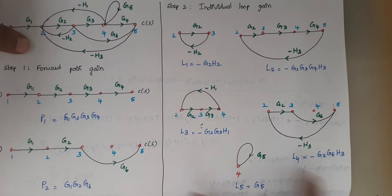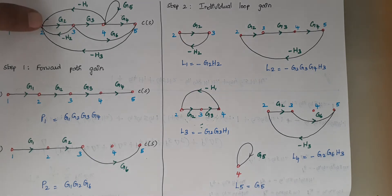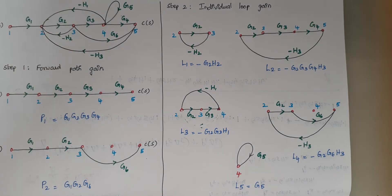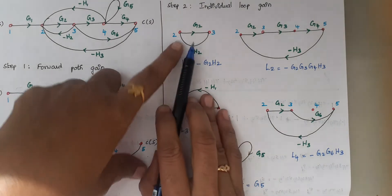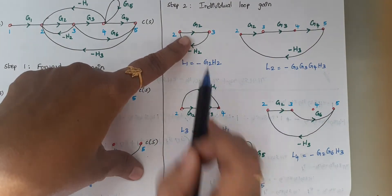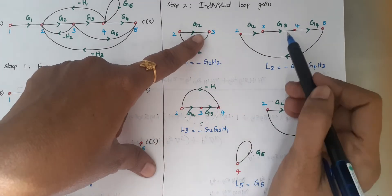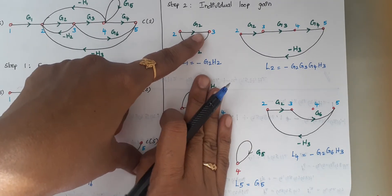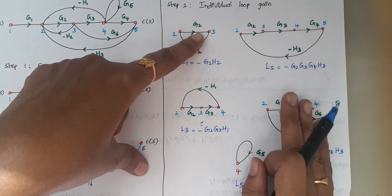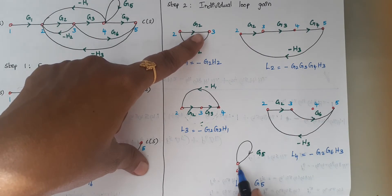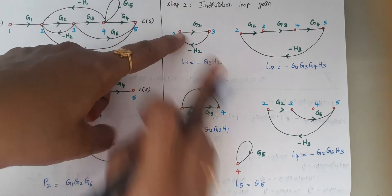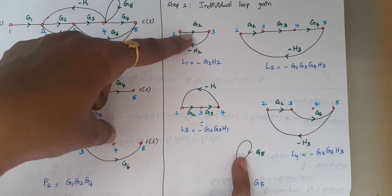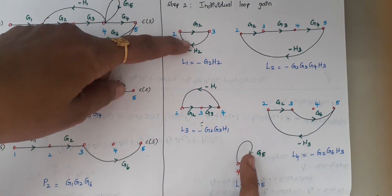Step 3 is finding the gain product of non-touching loop pairs. A non-touching loop pair consists of two loops that share no common node. Taking loop 1 (nodes 2 and 3), we compare it with all other loops. Loops 2, 3, and 4 all share nodes 2 or 3, so they are excluded. Loop 5 (node 4 only) shares no node with loop 1, so loop 1 and loop 5 form one non-touching pair.